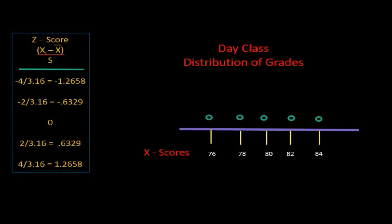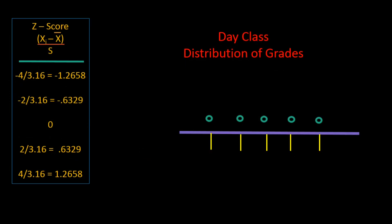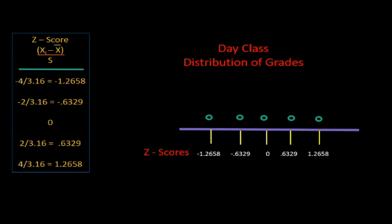Now let's replace the x-scores on the graph with the new standardized z-scores. The grades still remain in the original positions — the data has not changed, only the scale has changed. Remember the mean x-score was 80? The corresponding mean z-score is zero. The mean will always be zero on the z-scale — that is a very important concept. The mean on the z-scale will always be zero, so numbers to the left will always be negative and numbers to the right will always be positive. In statistics, we will mostly be using z-scores to evaluate data, not x-scores.